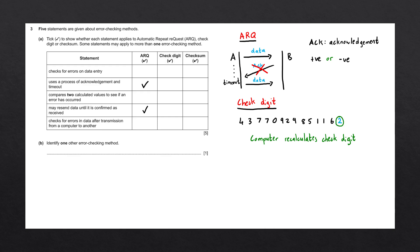Going through the table for check digits: 'Checks for errors on data entry' — we're entering data and checking it's correct, so this applies. 'Uses a process of acknowledgement and timeouts' — that only applies to ARQ, so this does not apply. 'Compares two calculated values to see if an error has occurred' — we are comparing the entered value with the computer's calculated value, so this applies. 'May resend data until it is confirmed as received' — we only enter the data once, so this does not apply. 'Checks for errors in data after transmission from a computer to another' — a human is entering data into a computer, so this does not apply.